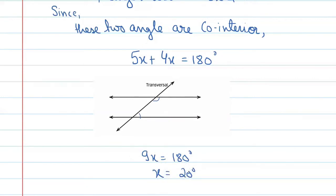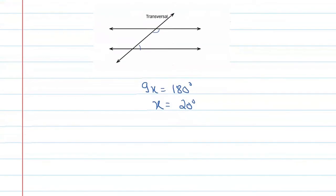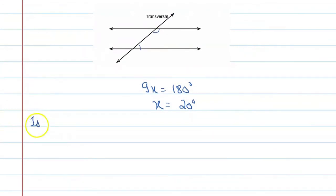Now, if we find the largest angle, we can say both angles will be: 5 times 20, that is 100, and the second angle is 4 times 20, that is 80. So our largest angle is 5x, that is 100.